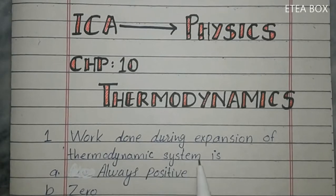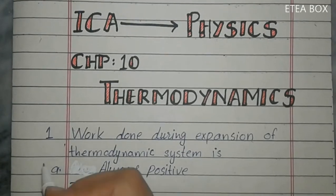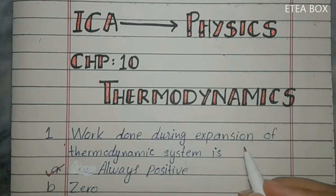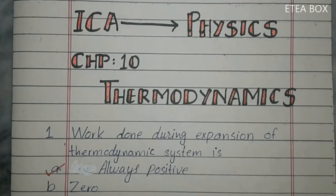First MCQ: work done during expansion of a thermodynamic system is always considered positive. Work done during expansion is always positive and work done during contraction is always negative. So here option A is correct.